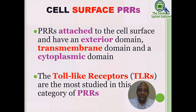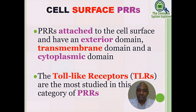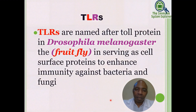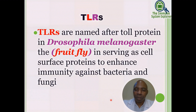Cell surface PRRs are attached to the surface of the cell and have an extracellular domain, a transmembrane domain, and a cytoplasmic domain. Toll-like receptors (TLRs) are the most studied type in this category. TLRs are named after the Toll protein in Drosophila melanogaster — the fruit fly — which serves as a cell surface protein enhancing immunity against bacteria and fungi.